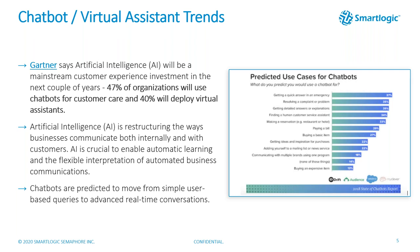Virtual assistants are voice-to-text devices you might find in your house. Together, though we can argue the difference, they are new introductions into the enterprise and a new way of communicating with customers, employees, and partners. Artificial intelligence is restructuring the way businesses communicate both internally — the back office — and with customers in the front office. Gartner says chatbots will move from simple user-based queries to advanced real-time conversation, often referred to as conversational commerce.